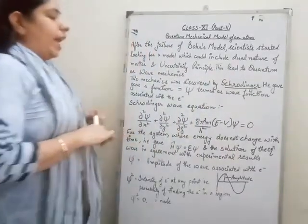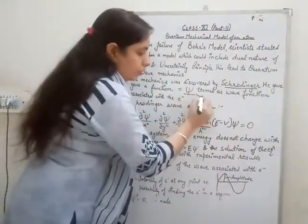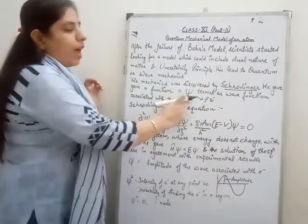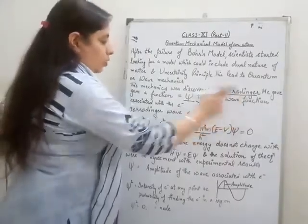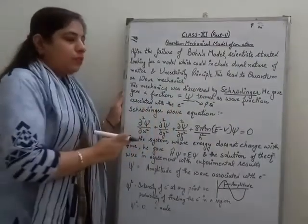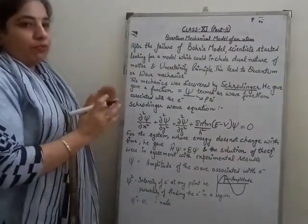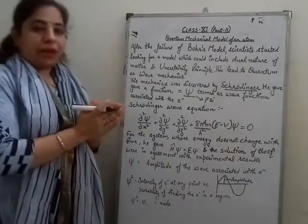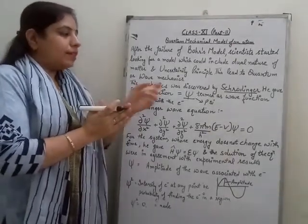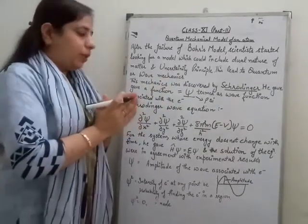He gave a function which is termed as psi. This psi is termed as the wave function, which is associated with the electron because we are considering the electron as a wave here. A wave propagates three-dimensionally — that means in x, y, and z axes — and psi was calculated in all three dimensions.